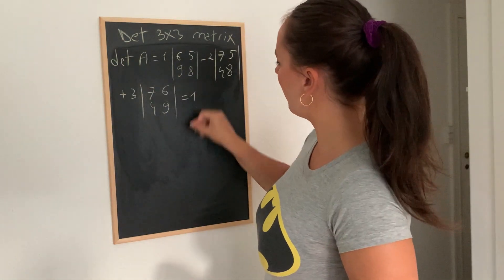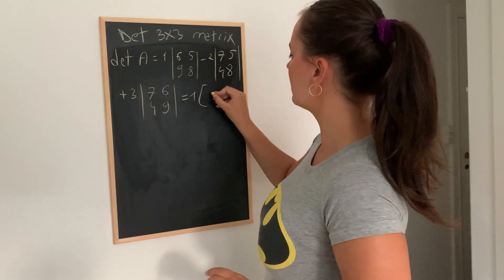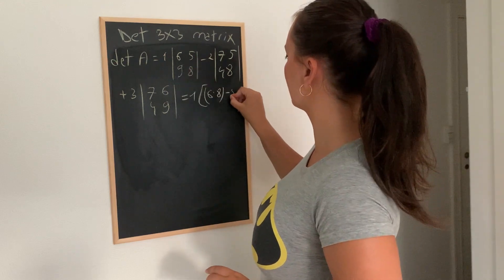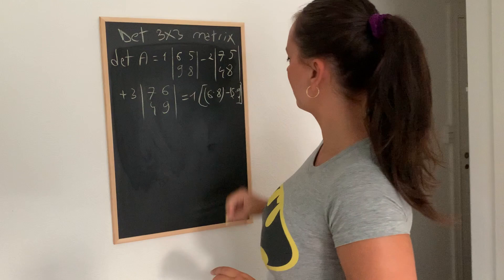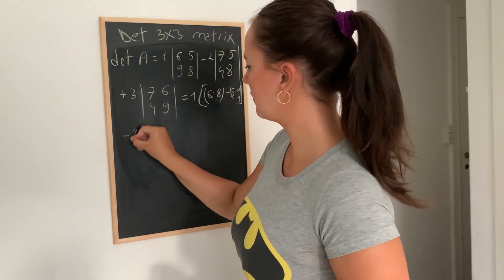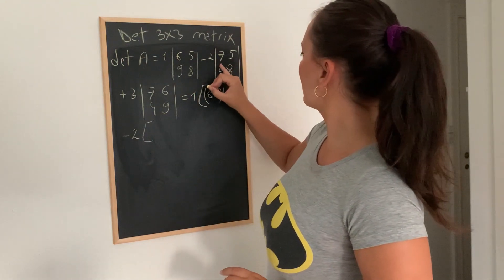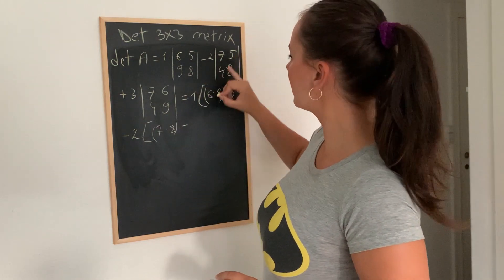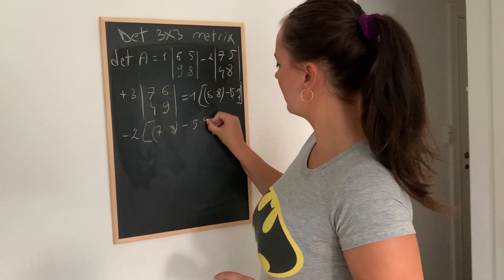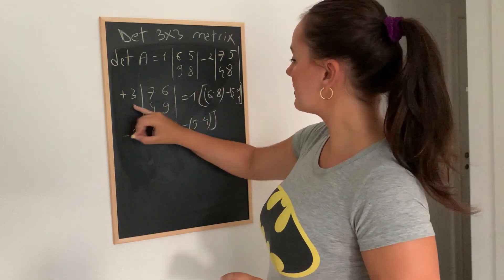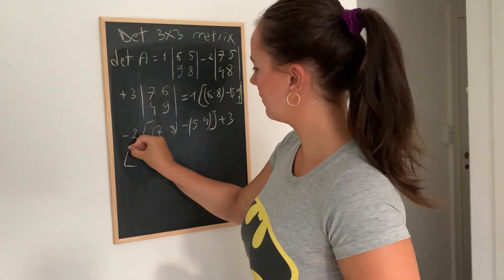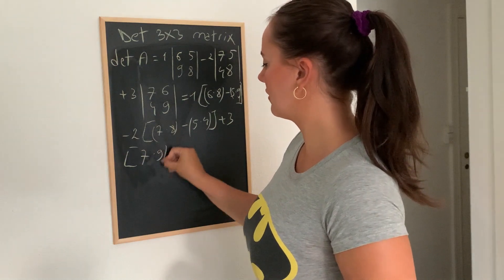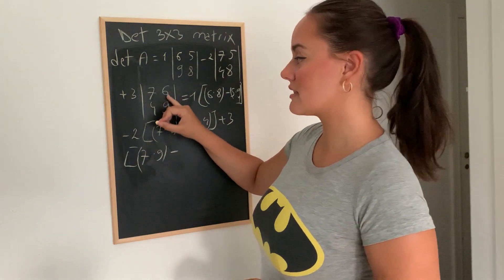All right, so we are at this stage. Now we're going to do 1 times 6 times 8 minus 5 times 9 minus 2, which is going to be 7 times 8 minus 5 times 4, plus 3,